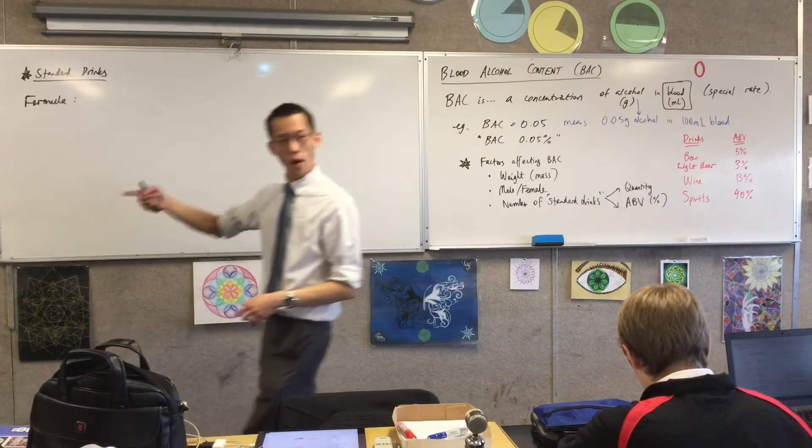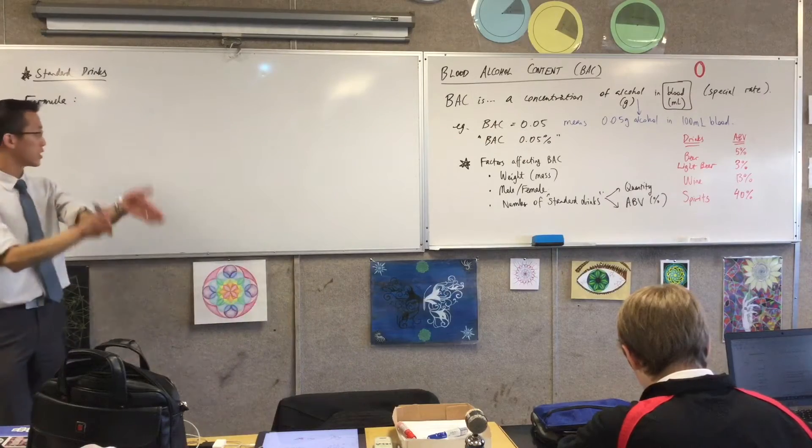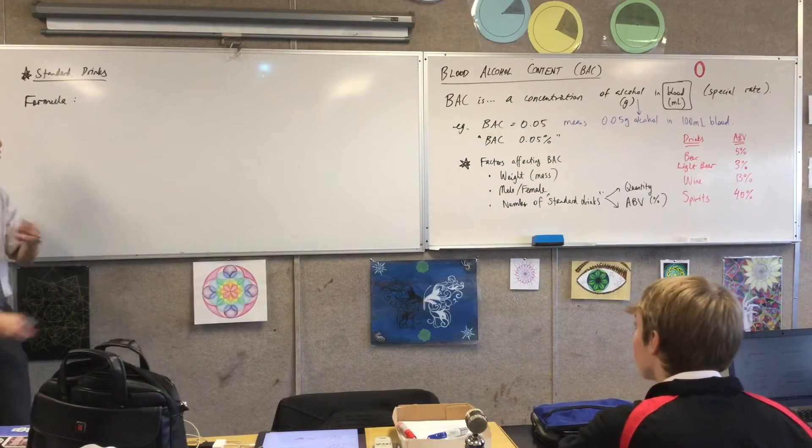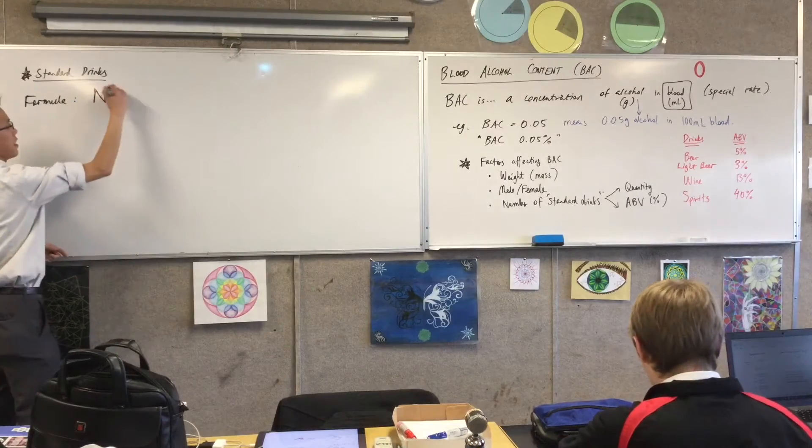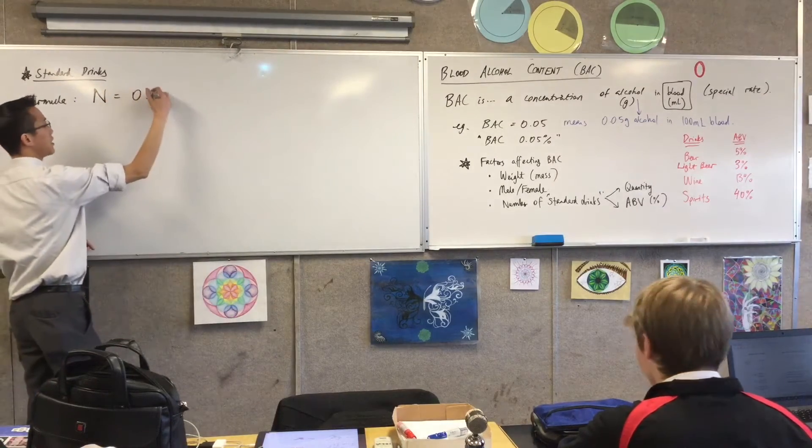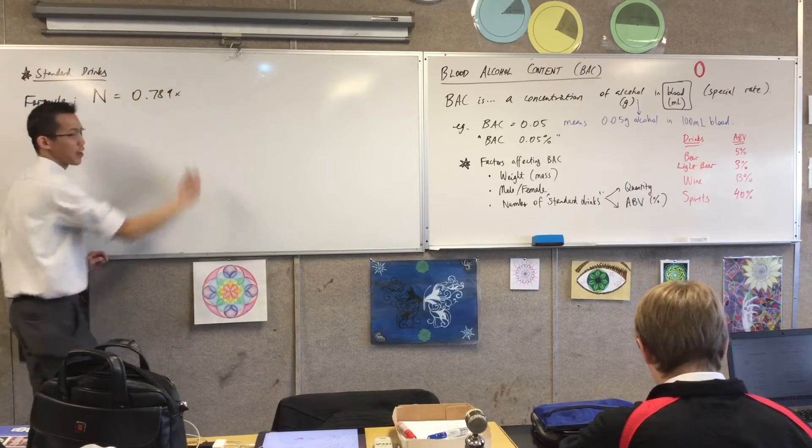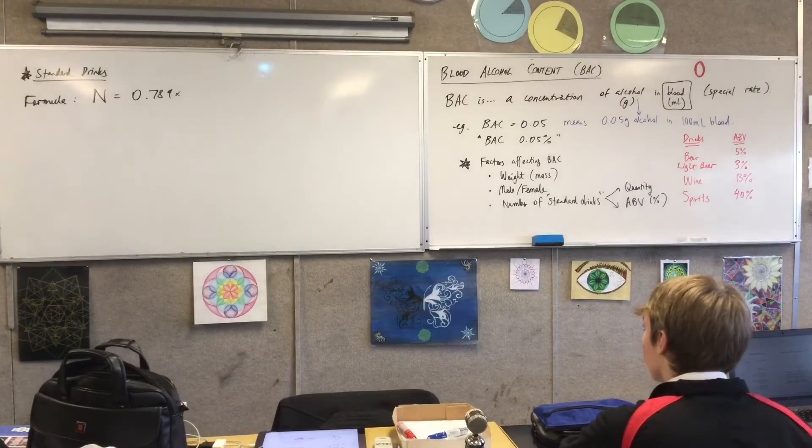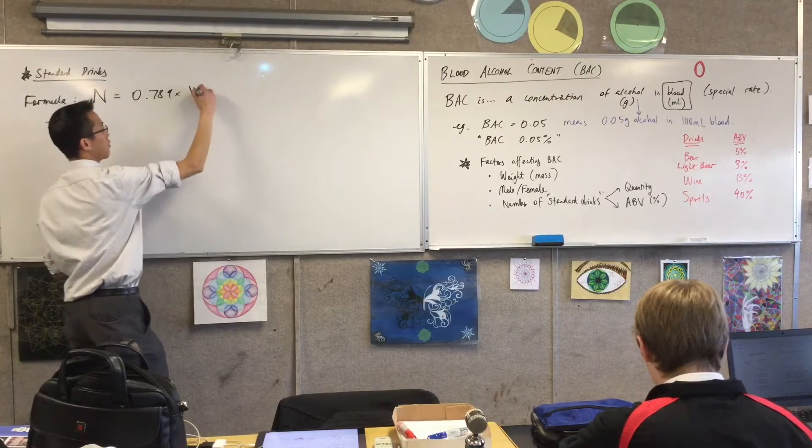So this is a formula for working out the number of standard drinks that you have drank based on two different things. Let me give you the formula first. N stands for the number of standard drinks. You've got this funny number at the front which people worked out with some crazy science, and then you've got two other bits that are relevant to it.